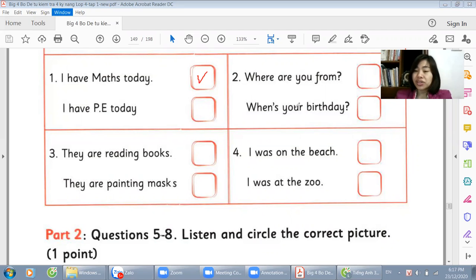Two. When's your birthday? It's on the first of July. So the second option. Three. What are they doing? They are painting masks. So option two for number three. Four. Where were you yesterday? I was on the beach. The first option. Finish. Good.